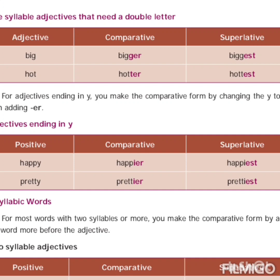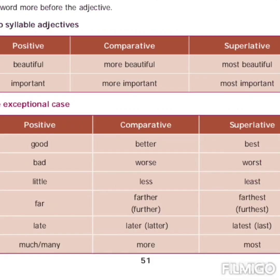For adjectives ending in 'y', make the comparative form by changing y to i, then add -er and -est. For example: happy → happier → happiest; pretty → prettier → prettiest. For adjectives with more than two syllables, we add 'more' for comparative and 'most' for superlative. Examples: beautiful → more beautiful → most beautiful; important → more important → most important.